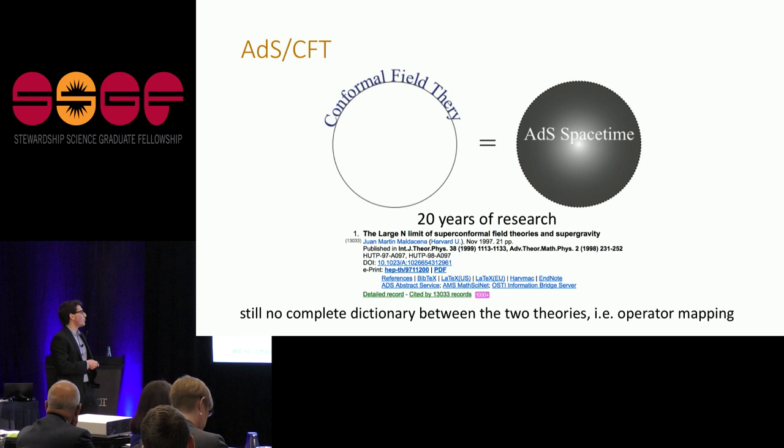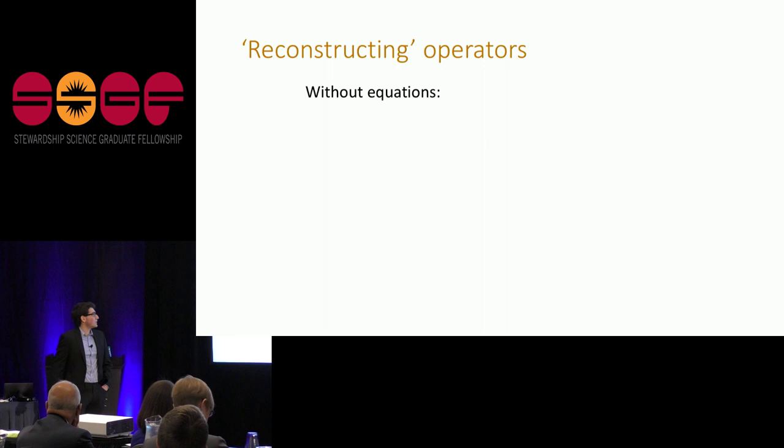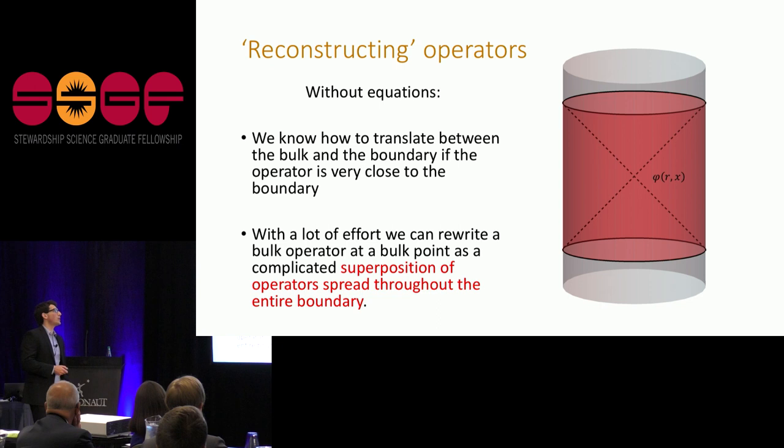But what we say is that we don't have a complete dictionary between the two theories. So that is, we don't know how to map objects in the AdS space-time to the boundary of that theory, which is where—so we understand the conformal field theory very well because it's not gravitational. We don't understand this very well, but we don't even know how to do this mapping. So that's not to say we don't know anything. We do know a few things. If the operators are really close to the boundary, we actually know how to map from one side to the other. But that's not super interesting because really close to the boundary, nothing interesting happens gravitationally.